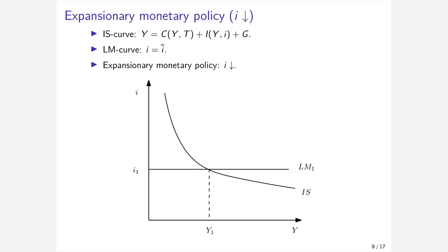Up to now, we've analyzed two crucial policy experiments with the ISLM model: expansionary fiscal policy and contractionary fiscal policy. However, there are two more policy experiments — expansionary monetary policy and contractionary monetary policy.